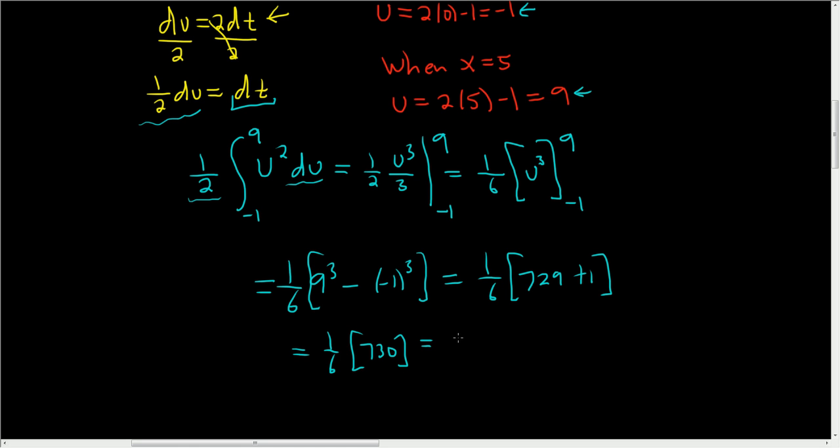And let's see, this is 365 over 3. How did I do that? I thought of it like this. All right. And 2 goes into 730, 365 times. And that is the final answer. That was kind of quick. I hope it helped.